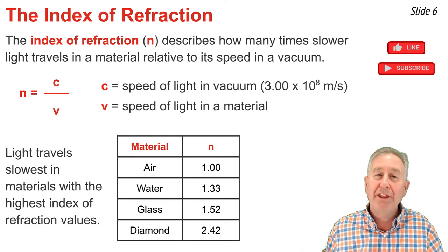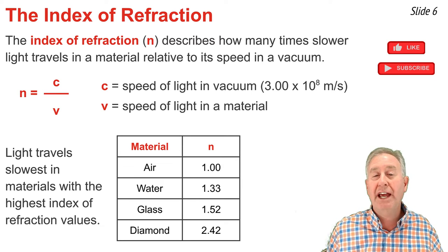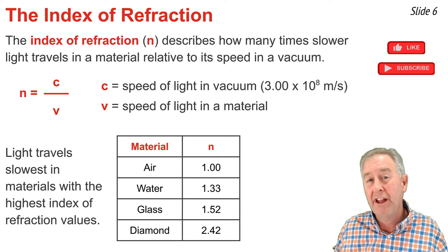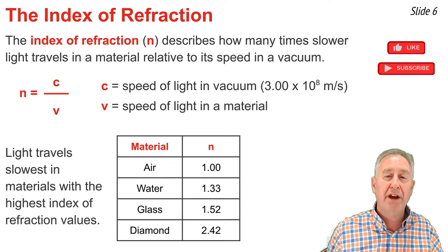You'll notice that air, the least optically dense material, has the smallest index of refraction. And diamond, the most optically dense material, has the largest index of refraction.